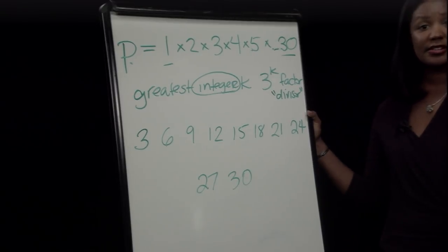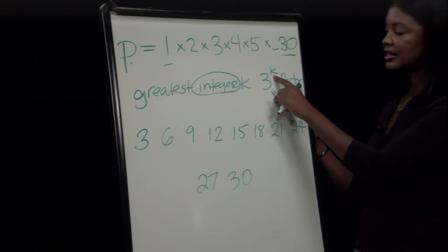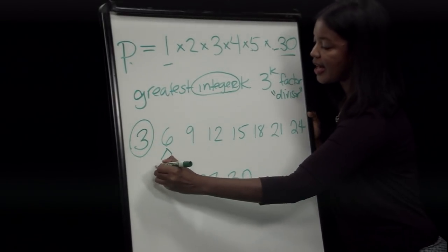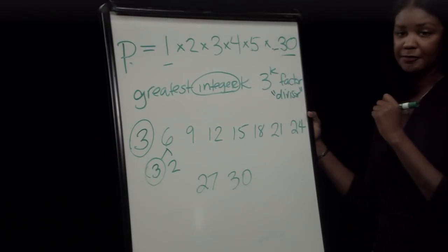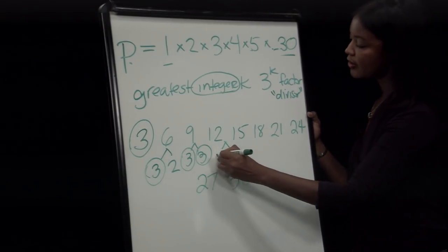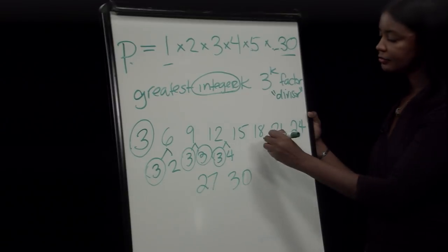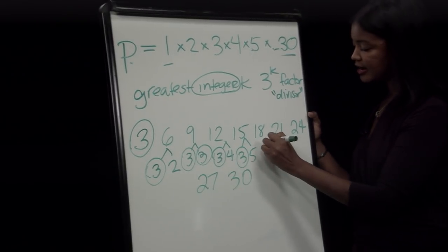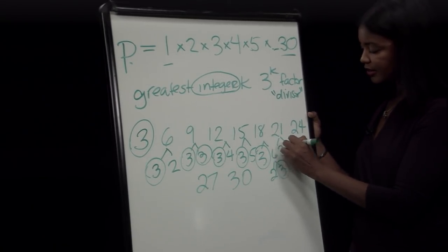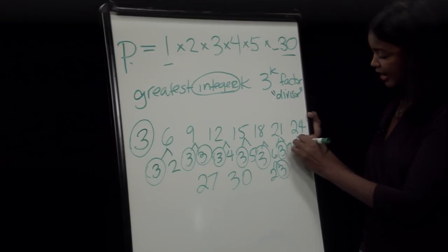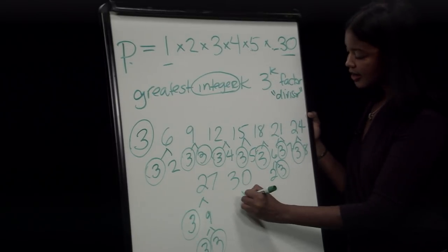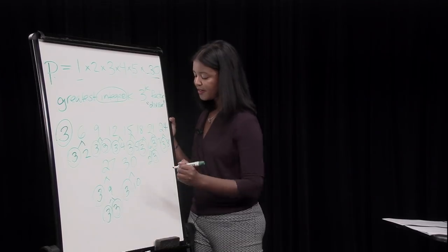Factoring each multiple: 3 gives one factor of 3; 6 = 3×2 gives one; 9 = 3×3 gives two; 12 = 3×4 gives one; 15 = 3×5 gives one; 18 = 3×6 = 3×2×3 gives two; 21 = 3×7 gives one; 24 = 3×8 gives one; 27 = 3×9 = 3×3×3 gives three; and 30 = 3×10 gives one factor of 3.